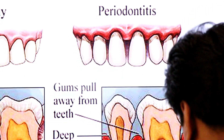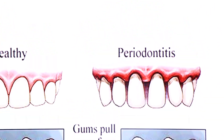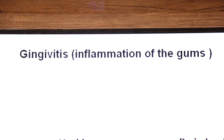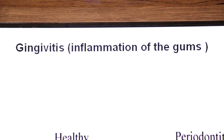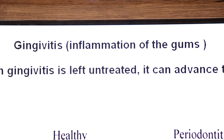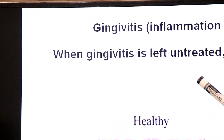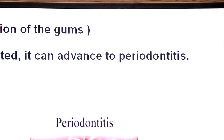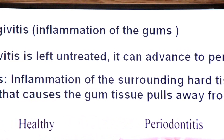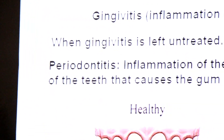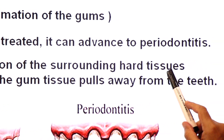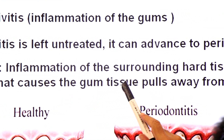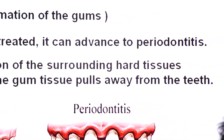The first stage is gingivitis — inflammation of the gums — and its main cause is plaque. If plaque is not removed, the disease advances to the next stage. When gingivitis is left untreated, it can advance to periodontitis, which is inflammation of the surrounding tissues of the teeth, causing the gum tissue to pull away from the teeth and pockets to form.